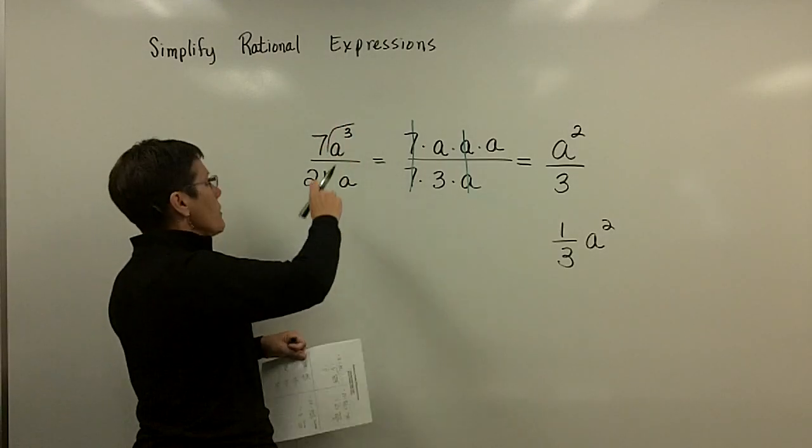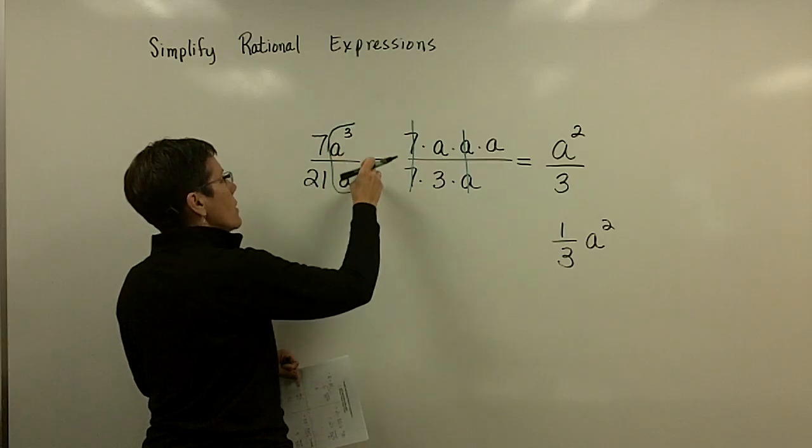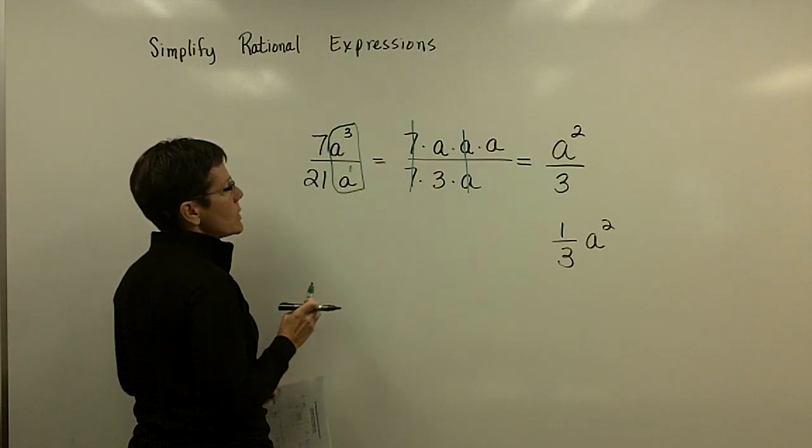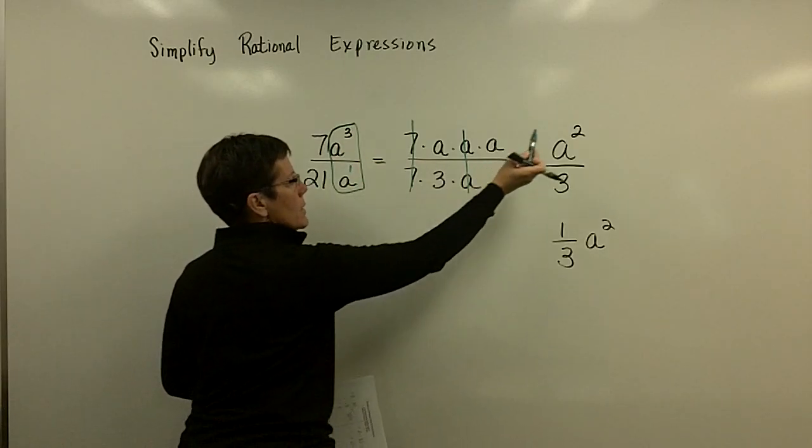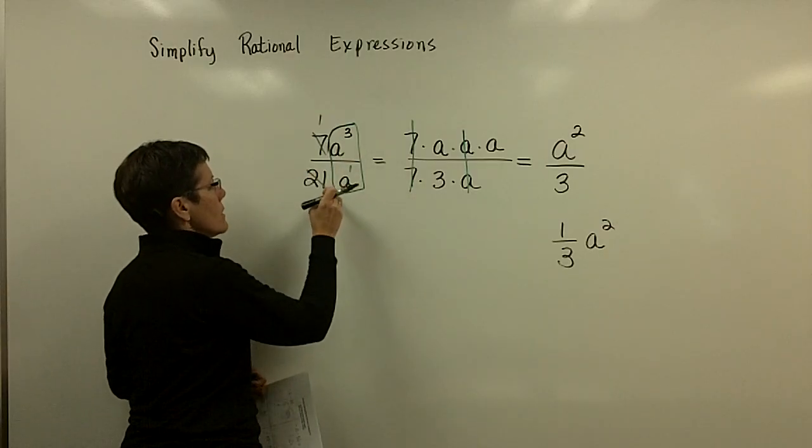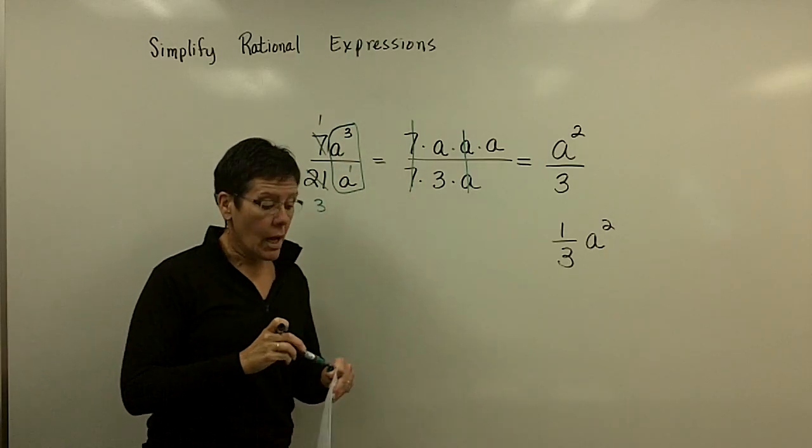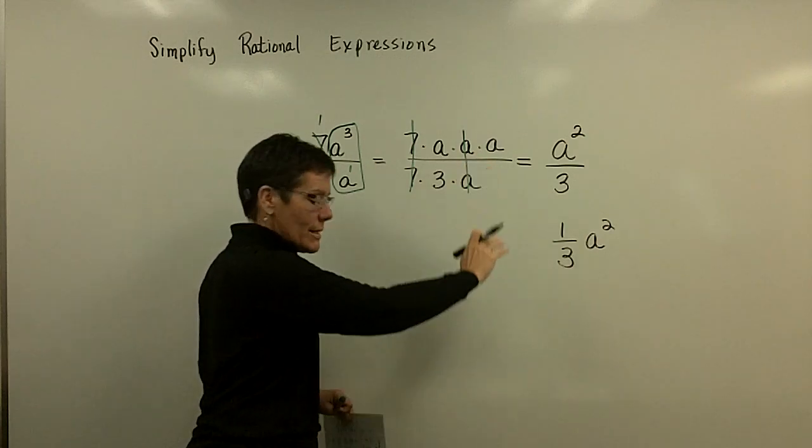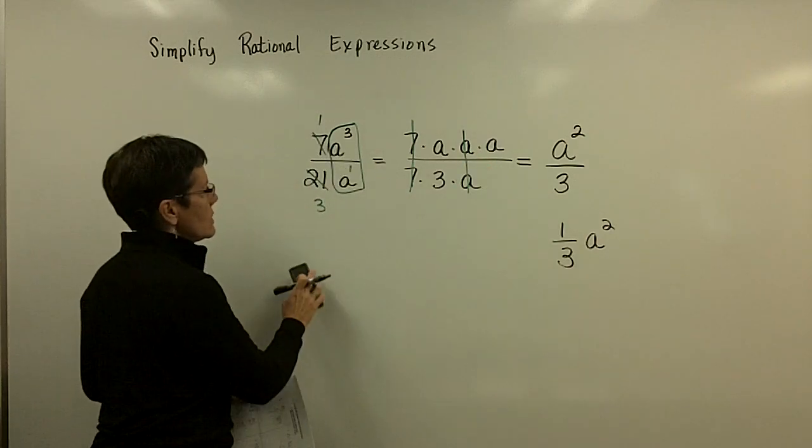Also, you know, I could have just said here, oh look, I'm going to subtract their exponents. And 3 minus 1 is 2. And then I could say 7 goes in here once, and 7 goes into there 3 times. Another approach. But I just wanted you to see this being written out in its factored form.